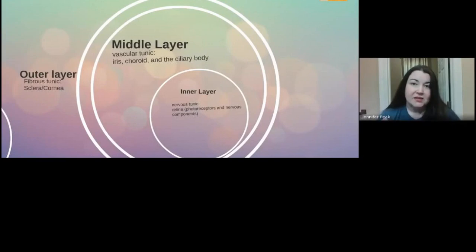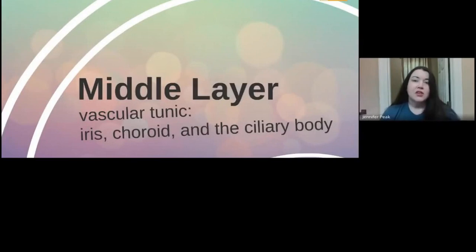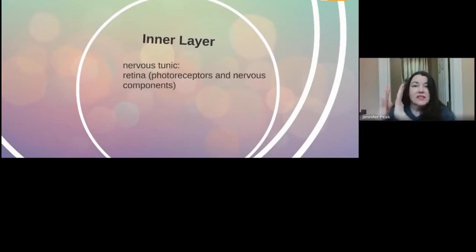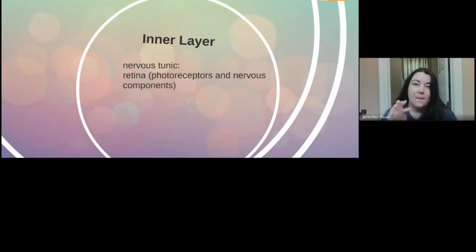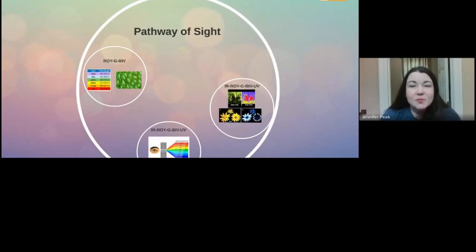There are three layers to the eye. The outer layer includes the sclera, which is the white of your eye, and the cornea, which is that transparent front portion. The middle layer is very vascular — that's your choroid and iris. The inner layer, toward the back of the eye, is your retina, which has photoreceptors — your rods and cones — and bipolar cells on the pigmented layer that attaches to the optic nerve.